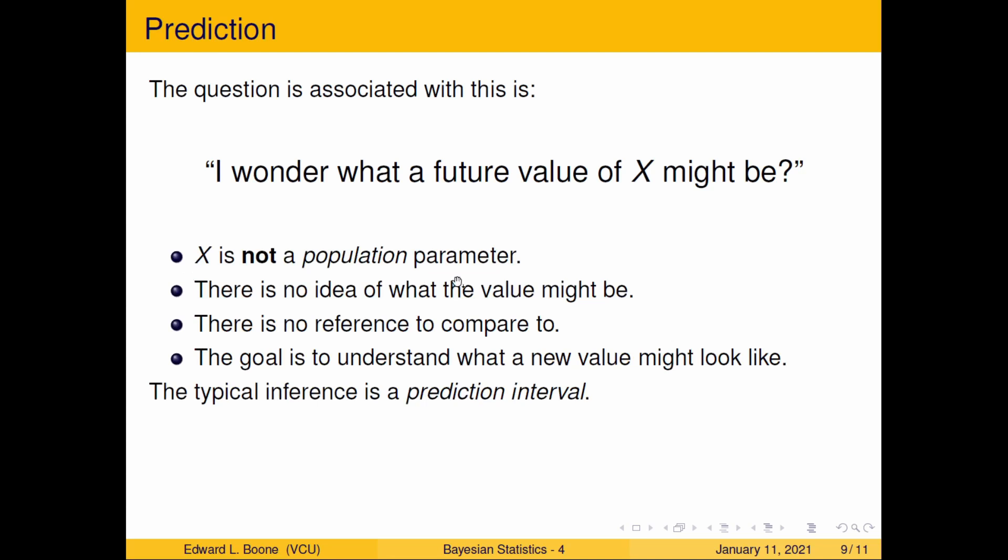We have no idea what the value might be, there's no reference to compare it to, and the goal is to understand what a new value might look like. The typical type of inference here is what's called a prediction interval.